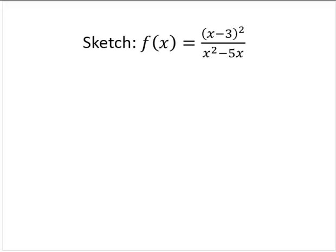Let's sketch f of x equals x minus 3 squared over x squared minus 5x. All right, so let's go through the process. Let's find the asymptotes and see what we can do.